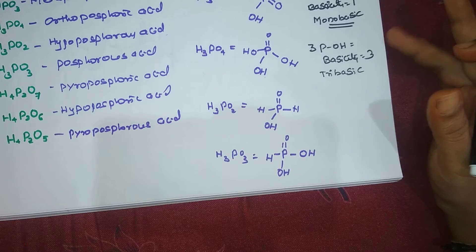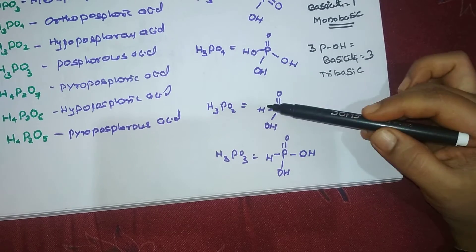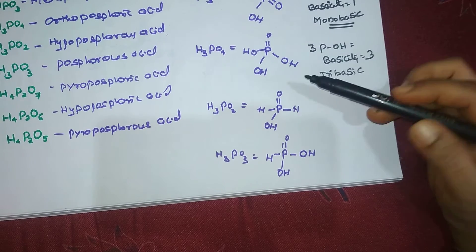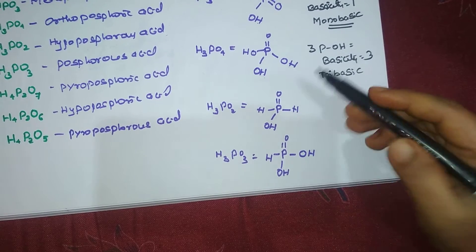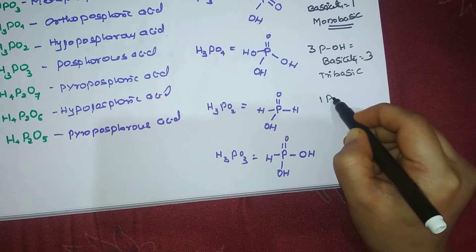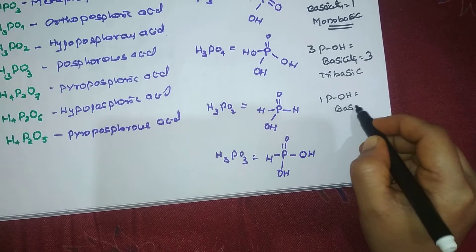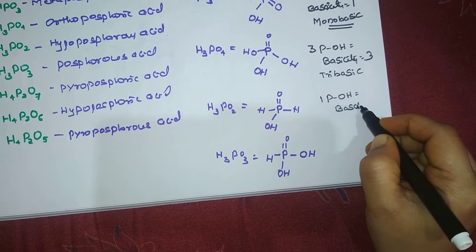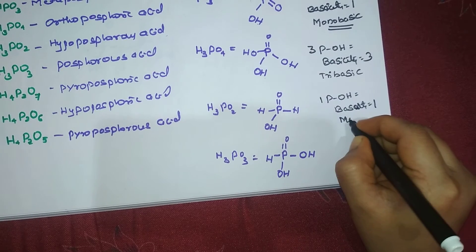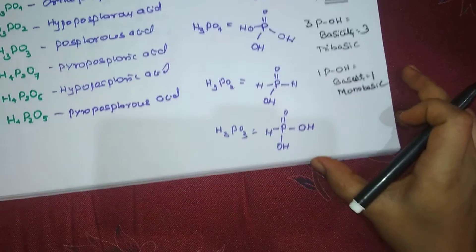Next is H₃PO₂, called hypophosphorous acid. This compound has only one P-OH bond, so the basicity is 1 and it is monobasic in nature.